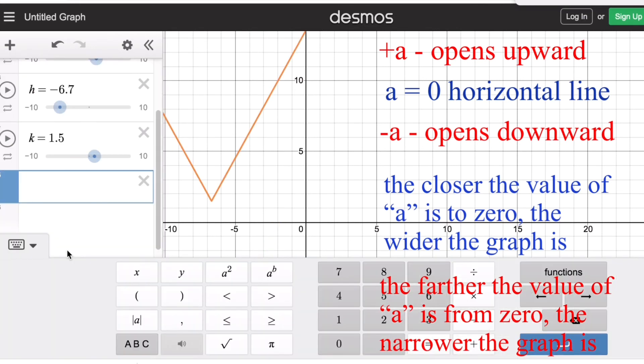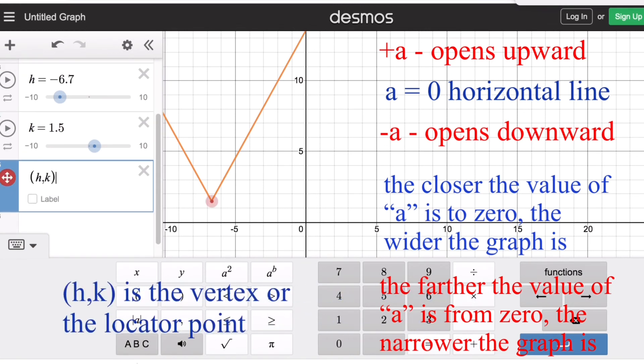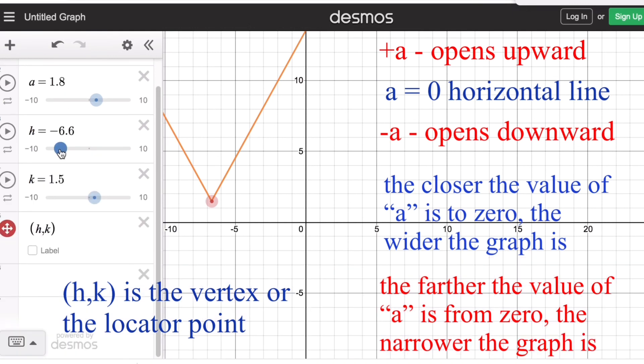We remember that the coordinates h, k is the vertex or the locator point of the graph, where h translates the graph left or right, while k translates the graph up or down.